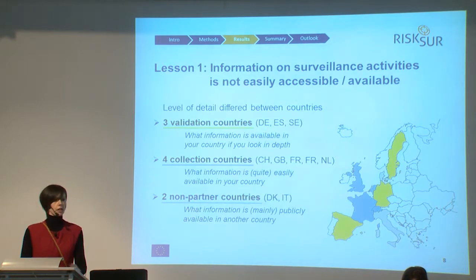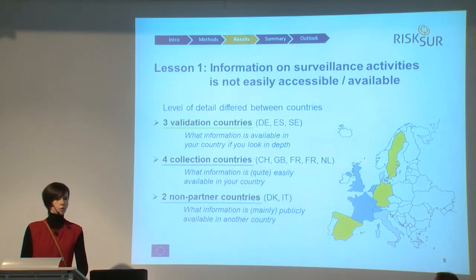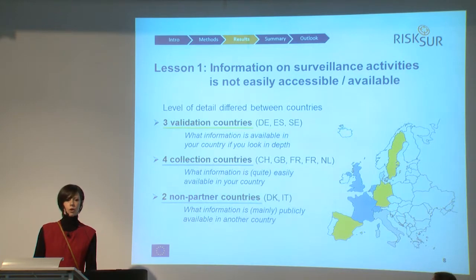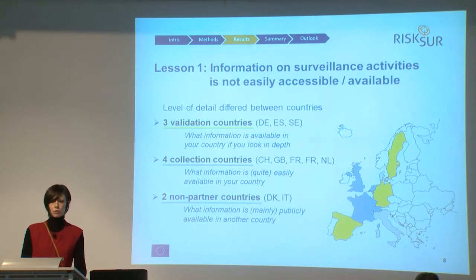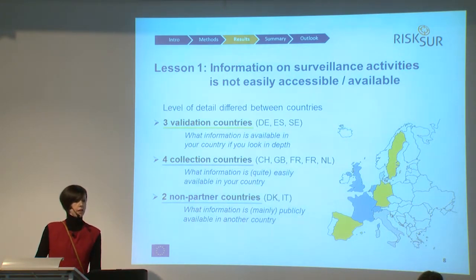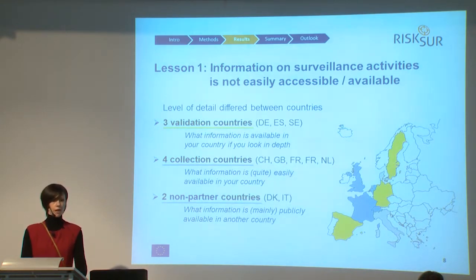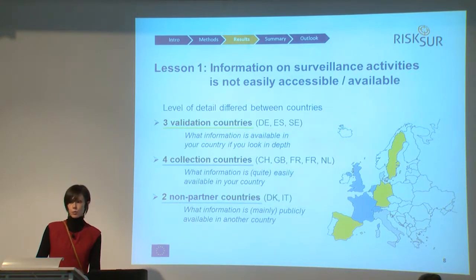The second level of detail is the collection countries, where partners helped in providing data but with no other involvement in the review itself. Contacts were exploited sometimes to find additional information, but to a much lesser extent. This reflects what information on surveillance is available if you know where to look. The last level of detail occurred in two non-partner countries, where people looked only at publicly available information, reflecting what is basically publicly available.